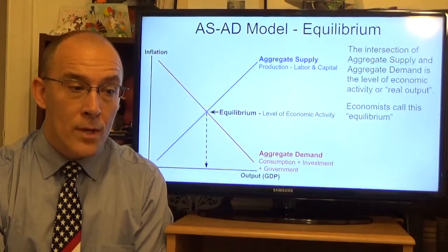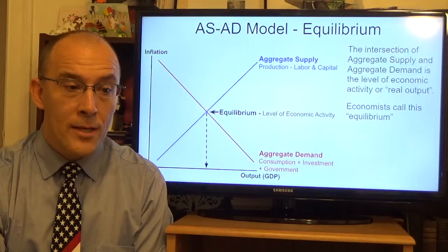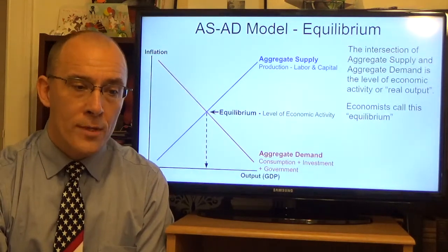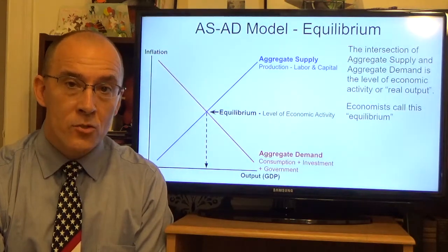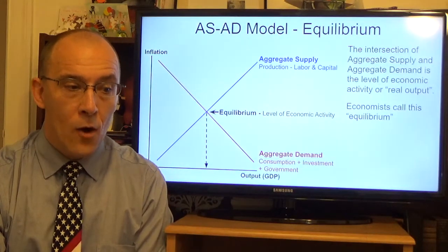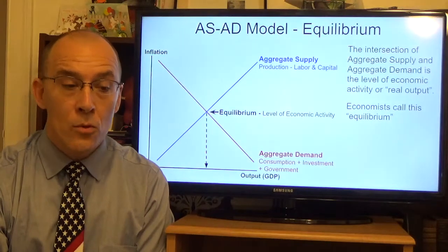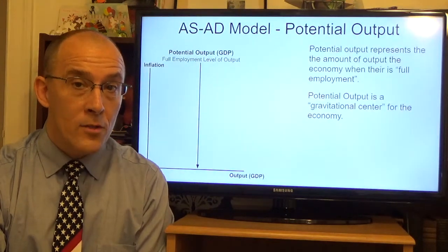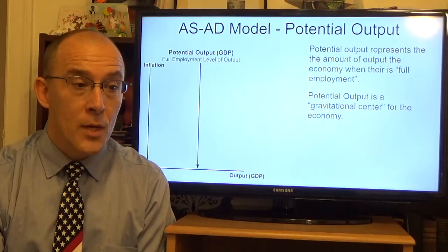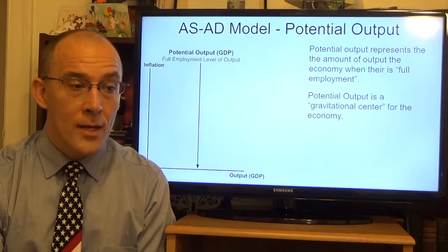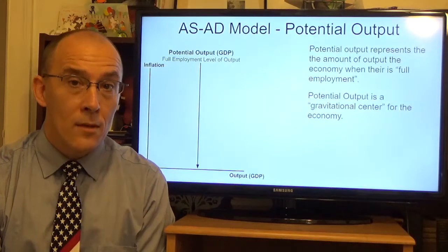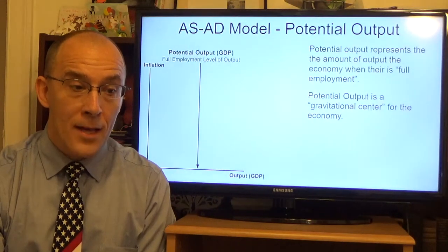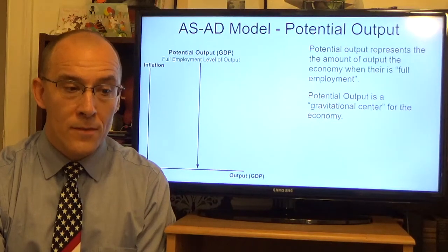The intersection of aggregate supply and aggregate demand gives us the level of real economic activity in the economy. Economists use the term equilibrium to describe this point — where the amount produced equals the amount demanded by the various sectors. Another useful component is potential output, shown as a vertical line representing the full employment level of output. When the labor force is being utilized to the fullest, this is the amount of output you could expect.